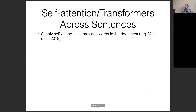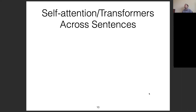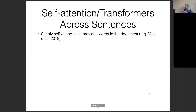One advantage of RNNs is that it's conceptually simple to encode all of the information seen before, and they have theoretically infinite context. However, empirically RNNs can be somewhat slow at decoding time, and people have been moving towards self-attention or transformer models, both because they can be faster and because they give good empirical results.